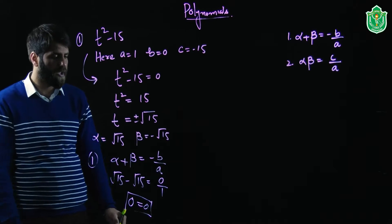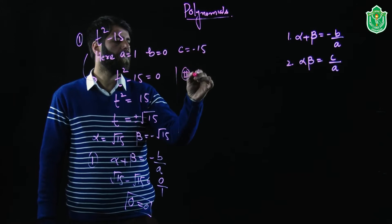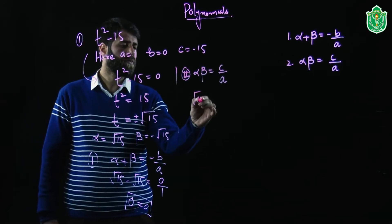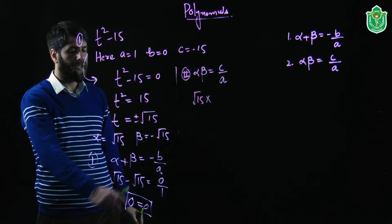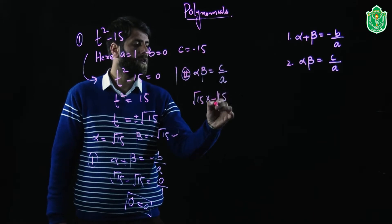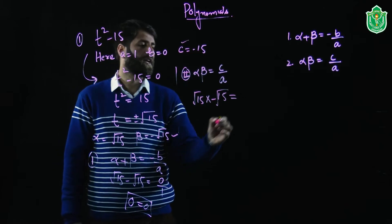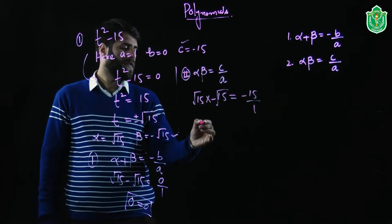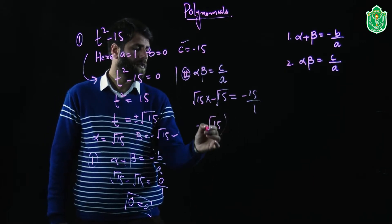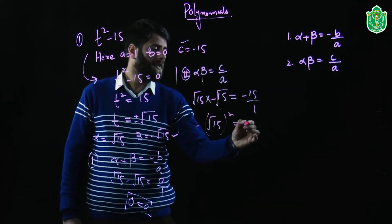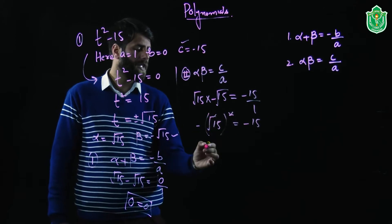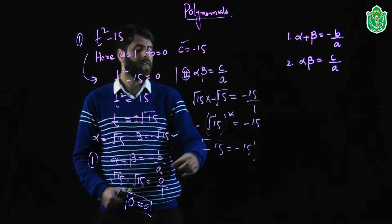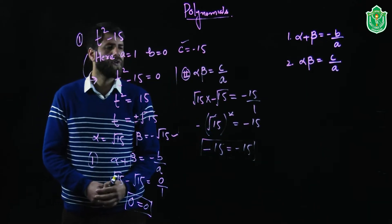The second relationship is alpha into beta equals c divided by a. Alpha is root 15 and beta is minus root 15, so alpha into beta is root 15 into minus root 15, which equals minus root 15 squared, that is minus 15. And c divided by a is minus 15 divided by 1, which is minus 15. So minus 15 equals minus 15 — the second relationship is verified.